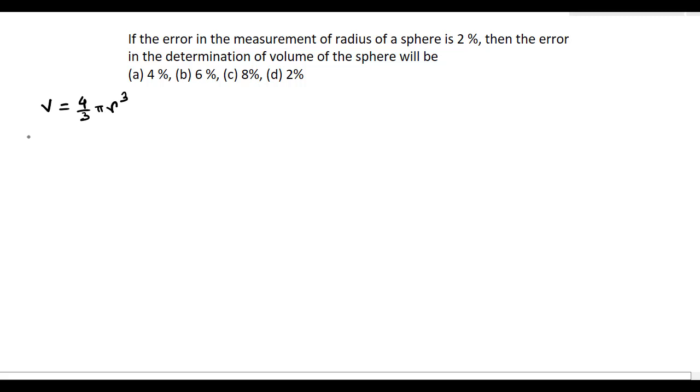Now, if we take logarithm in both sides, then ln of V is equal to ln of 4 by 3 pi plus 3 ln r.